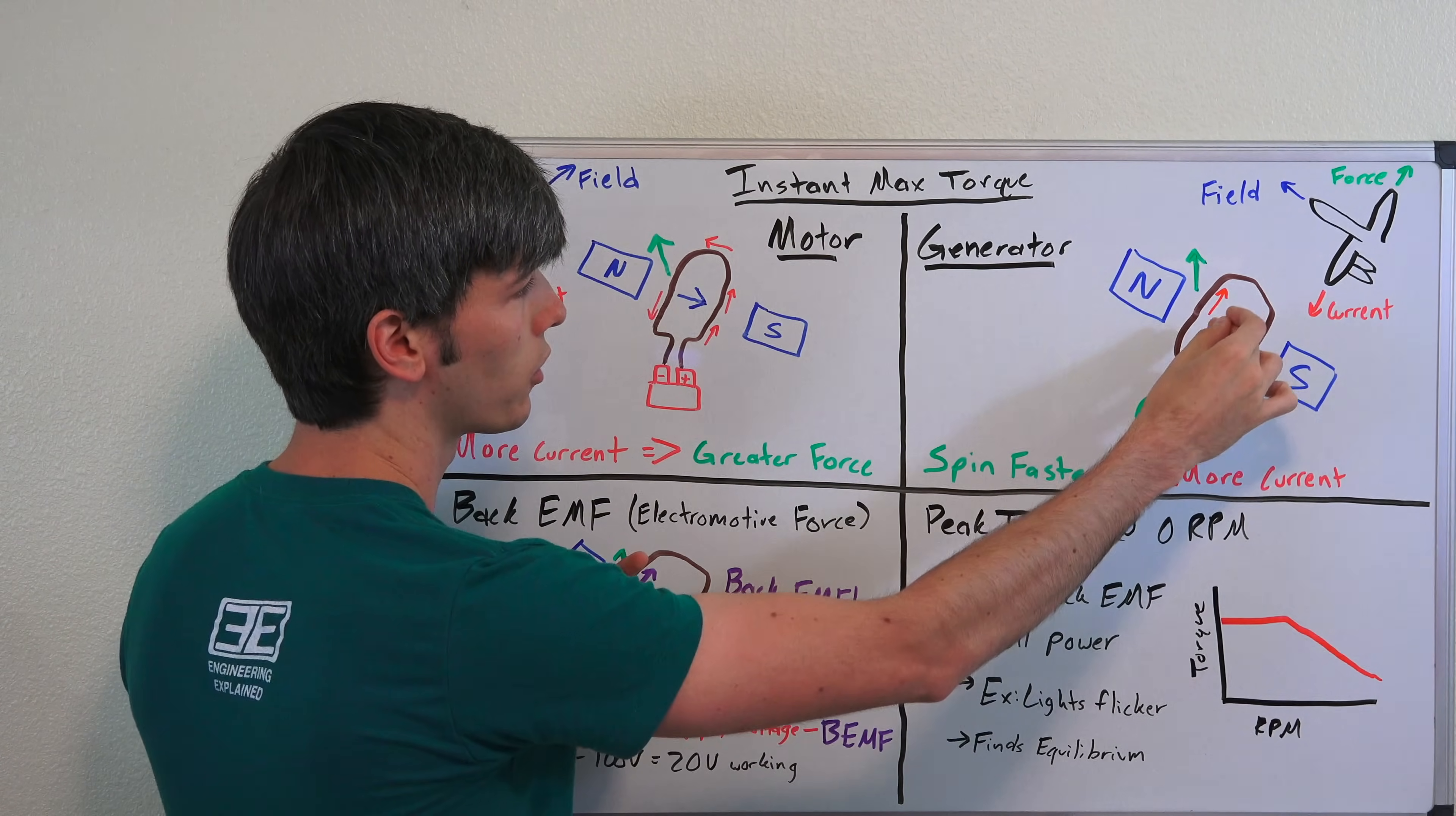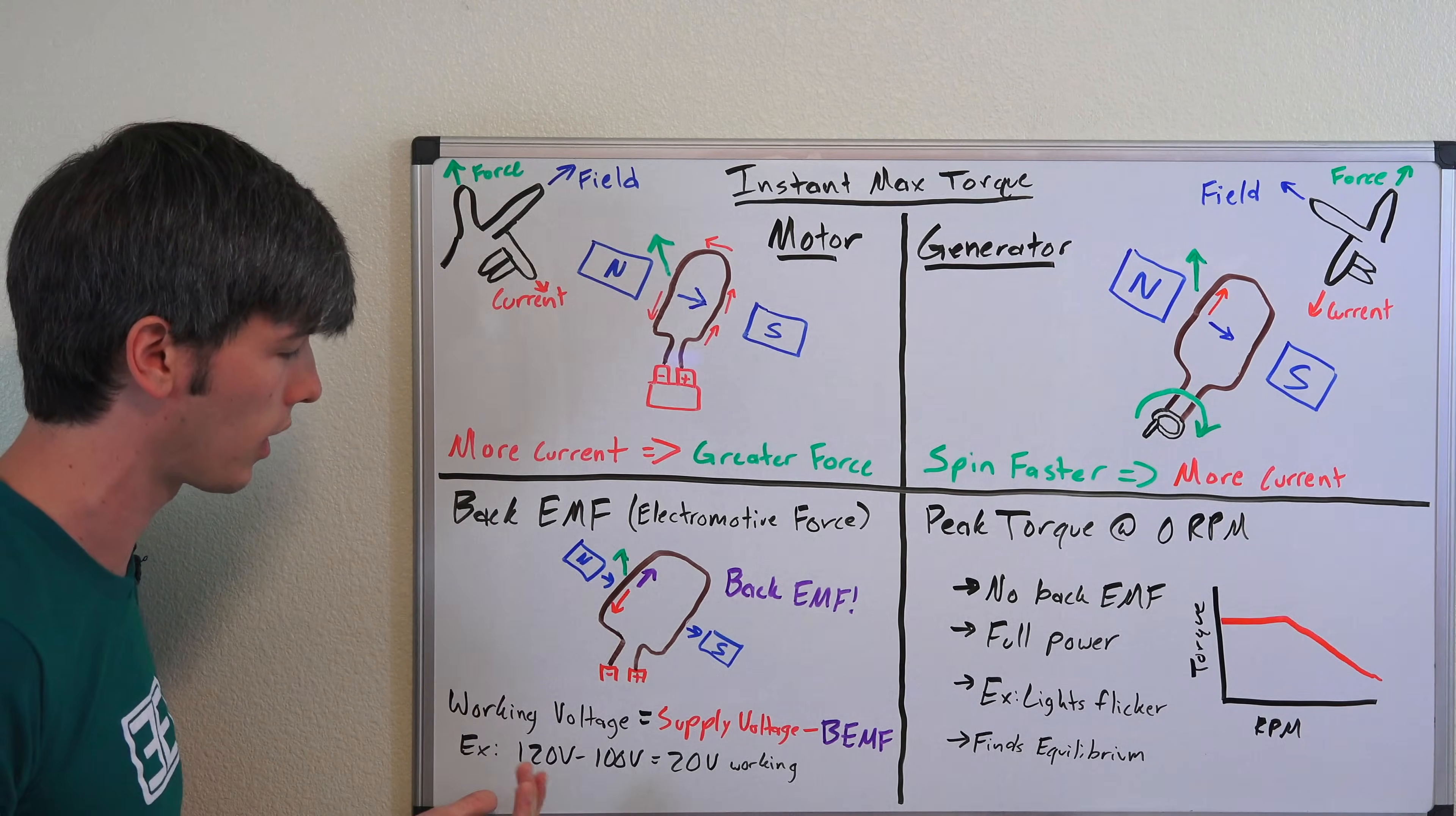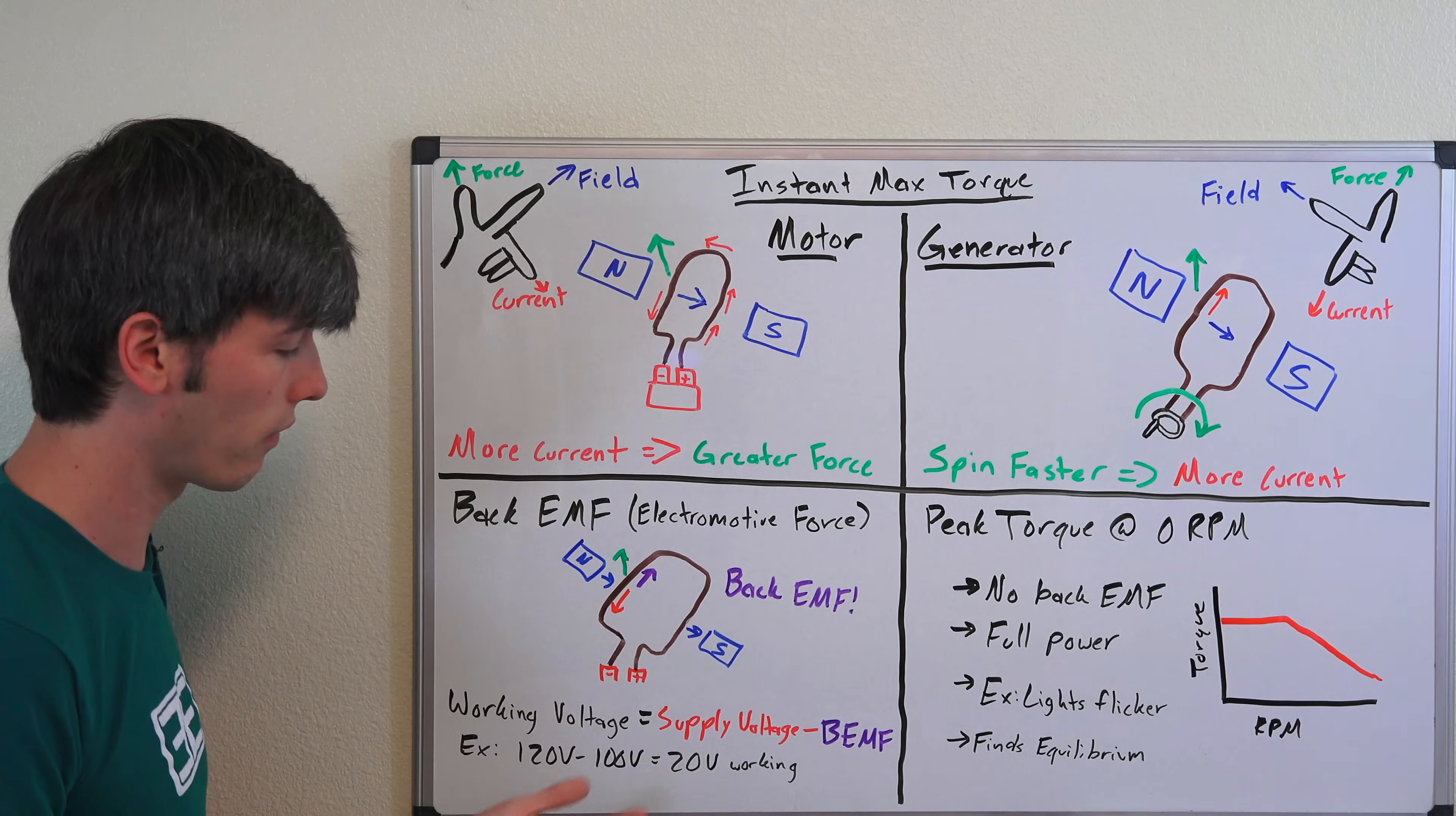So just a quick example, let's say you had a 120 volt outlet, you plug in, it starts spinning up and you've got a back EMF of 100 volts. So your working voltage is just 20 volts. Now this explains why you have peak torque available at zero RPM.